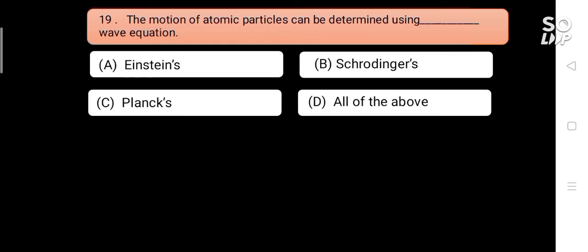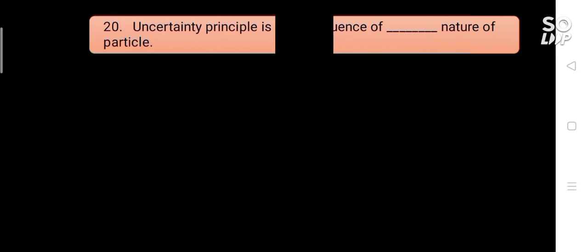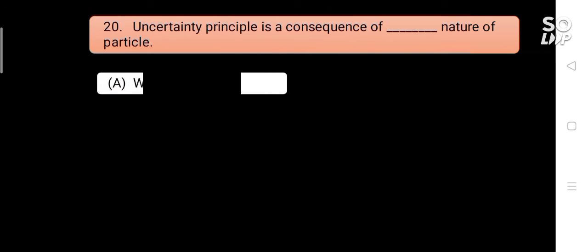Atomic particles can be determined using blank wave equation. Options are: A) Einstein's, B) Schrödinger's, C) Planck's, D) all of the above. Answer is B) Schrödinger's.